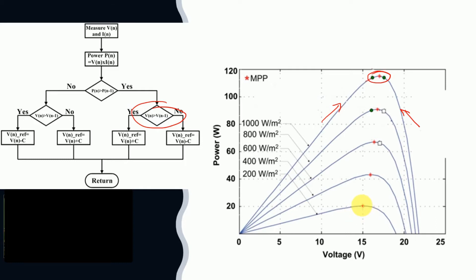Let us say we were operating at point number one, and point zero was where we started our system. At point zero we perturbed the system and moved to point number one. Now, after reaching point number one, P&O is not intelligent enough to recognize that this is the maximum power point and stop oscillating. Instead it moves one more step to check if power is increasing, and it perturbs the system voltage to give a positive increment.